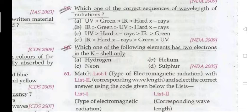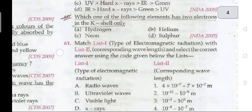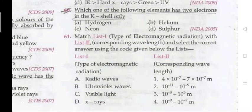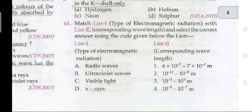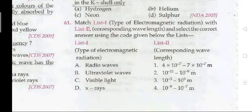Question 60: which one of the following elements has two electrons in the K shell only? The answer is helium. Question 61: match the column — types of electromagnetic radiation with corresponding wavelengths. The answer for radio waves is 10^-9 to 10^-7 meter range.